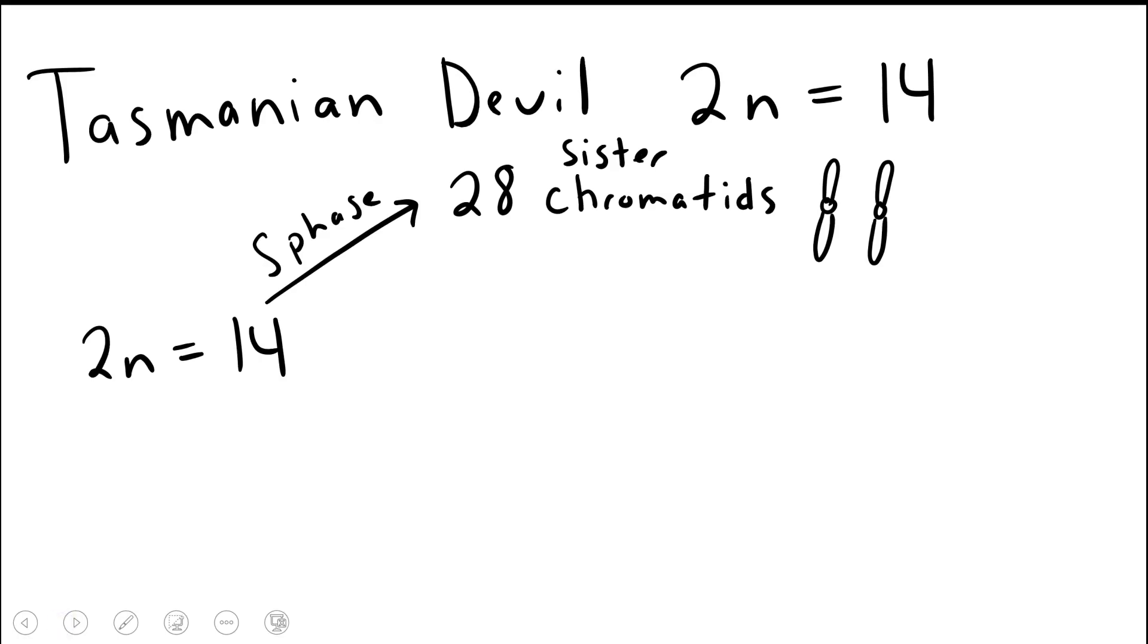Keep in mind that we must double the DNA before any cell division, including meiosis. Doubling 12 chromosomes gives us 28 sister chromatids, as can be seen here. And these homologous chromosomes will essentially be doubled into these 28 sister chromatids.